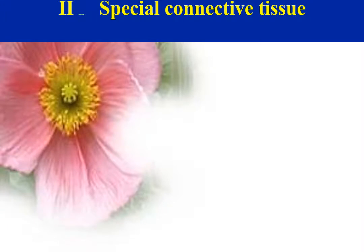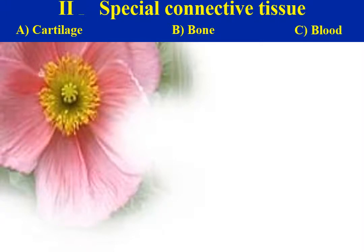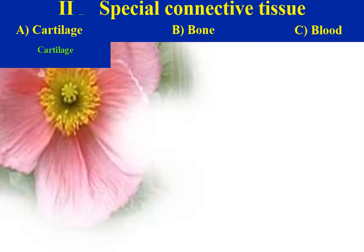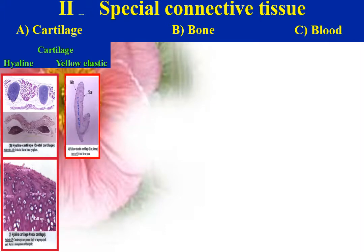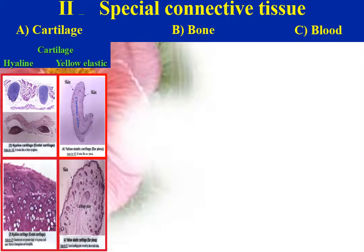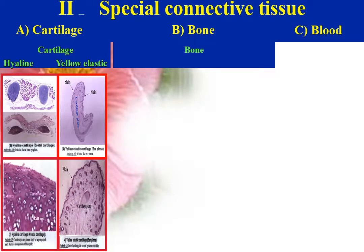Special connective tissue can be subdivided according to the nature of the matrix into cartilage with rigid matrix, bone with calcified matrix, and blood with fluid matrix. Cartilage is further subdivided into three groups according to differences in the abundance of fibers present in the ground substance: hyaline cartilage, yellow elastic cartilage, and fibrous cartilage. An example of hyaline cartilage is the costal cartilage; an example of yellow elastic cartilage is the ear pinna.